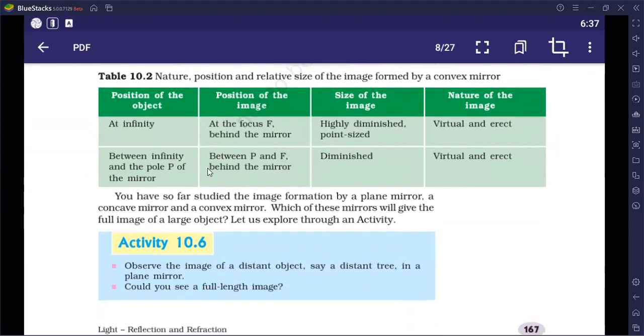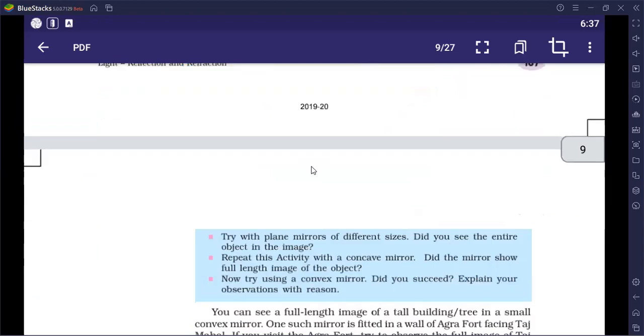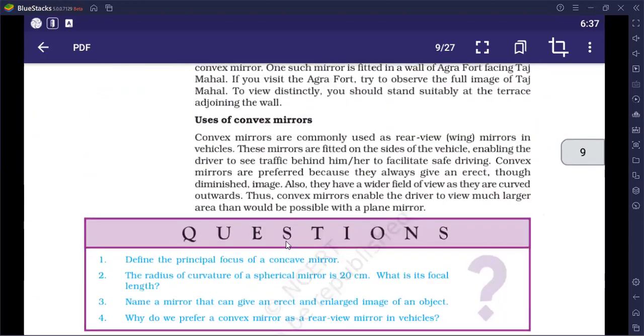Convex mirror, there are only two positions: infinity and between infinity and pole. And here, you have a virtual and erect image. This is important from the numerical point of view. Because if the image is erect, then your H' will be positive. If the image is inverted, then your H' will be negative.